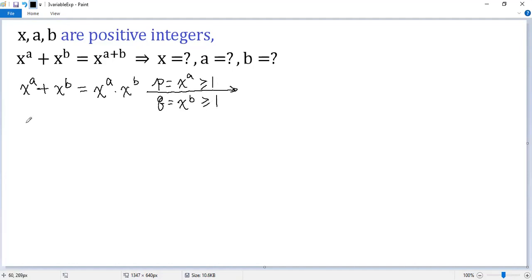Now the equation becomes p plus q equals p times q. Both sides subtract p, then subtract q. So we get 0 equals pq minus p minus q.